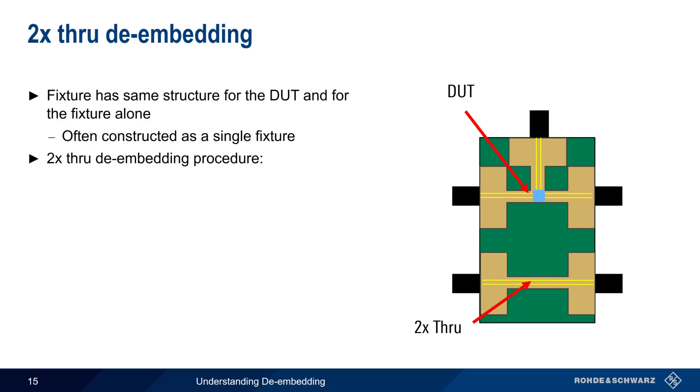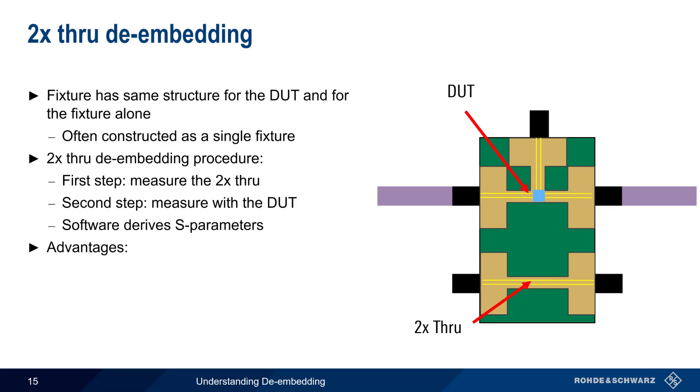The 2x through de-embedding procedure has three steps. First, we make a measurement of the 2x through. After this measurement is made, we then make a second measurement, this time with a DUT. Special software algorithms then derive the S-parameters used for de-embedding. De-embedding with a 2x through has several advantages. Although it's very similar to the TRL calibration we mentioned earlier, it requires fewer coupons and has similar or better accuracy than TRL. Fewer coupons also means 2x through de-embedding is faster and there are fewer opportunities for mistakes or error. This newer de-embedding methodology is well accepted by the industry, and in most cases the software algorithms can correct for impedance differences as well.